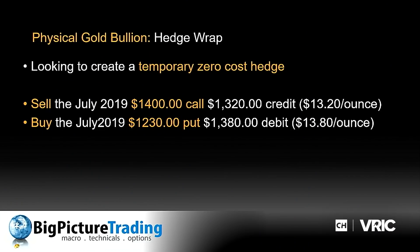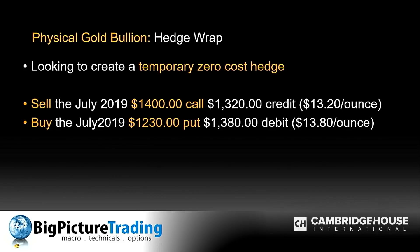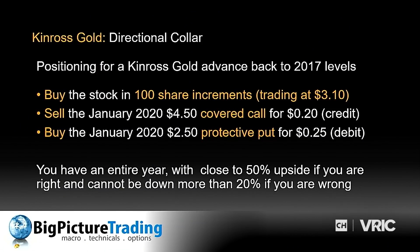Second: learn to hedge-wrap your gold. Whether you own gold bullion in the futures market or in physical form, you can hedge-wrap it in the futures market at almost zero cost. What I'm doing is selling a July $1,400 call option generating a $1,300 credit, then buying a put option that removes all downside risk below $1,230. So if you hear someone say gold's going back to $1,100, you can hedge-wrap your position and remove the risk of loss below $1,230 at no cost by capping the upside at $1,400 through the summer.